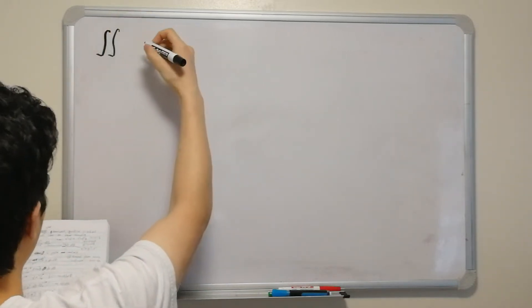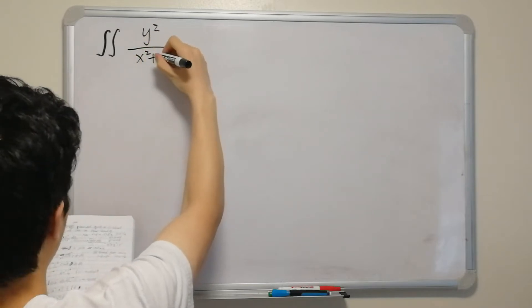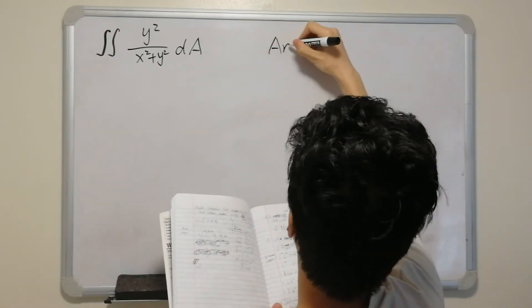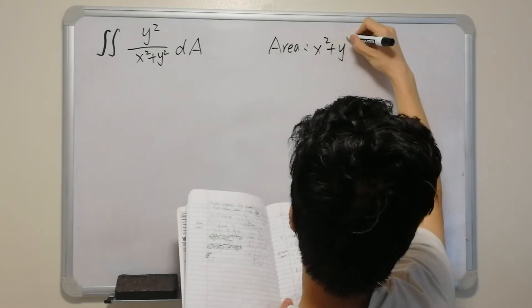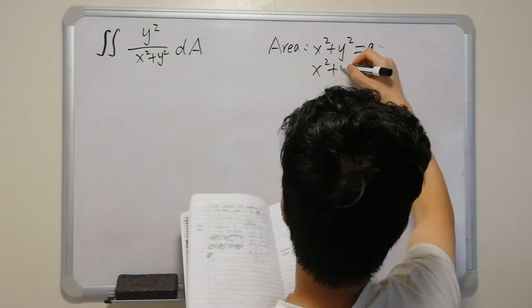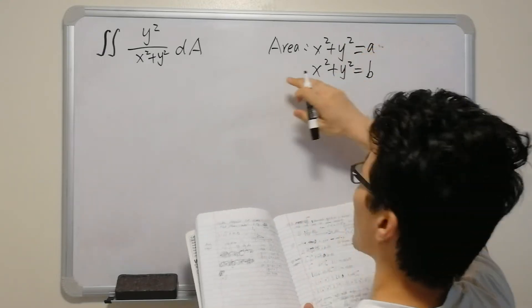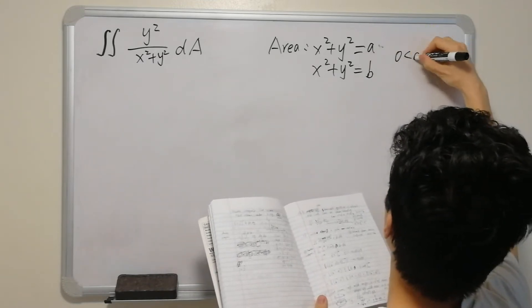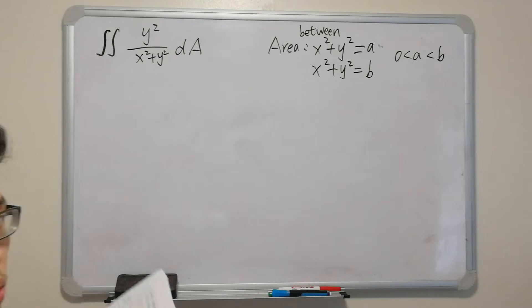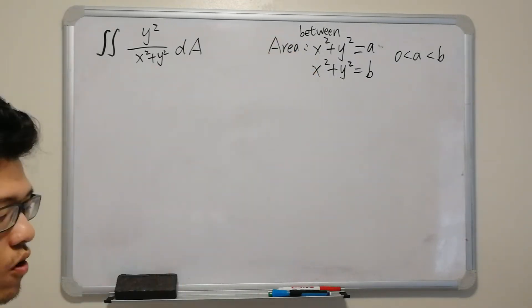Let me start with some double integrals in polar coordinates. The first example is to evaluate the double integral of y² over (x²+y²), where the area is given between two circles: x²+y²=a² and x²+y²=b². The shape of the area is like a ring, with b greater than a.